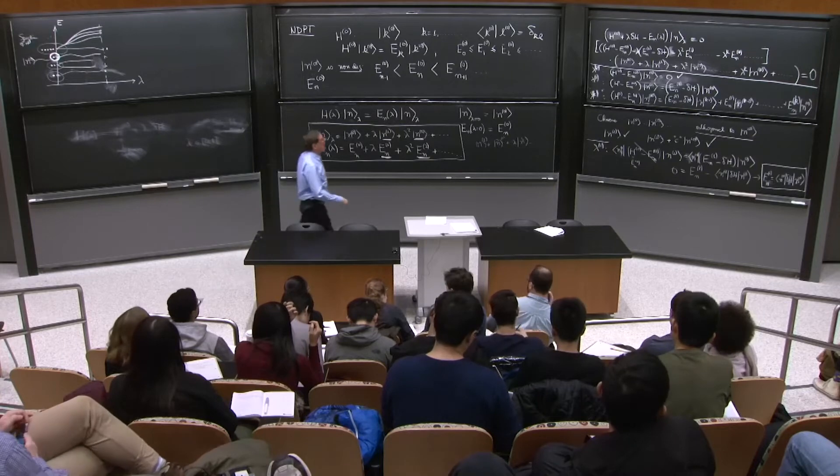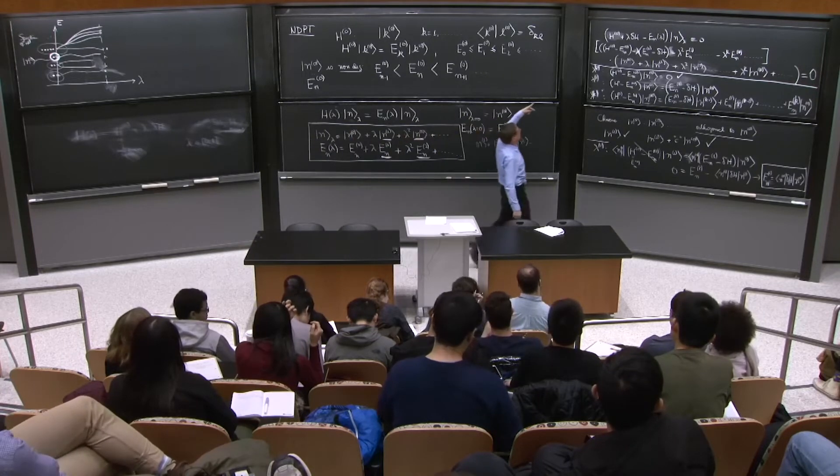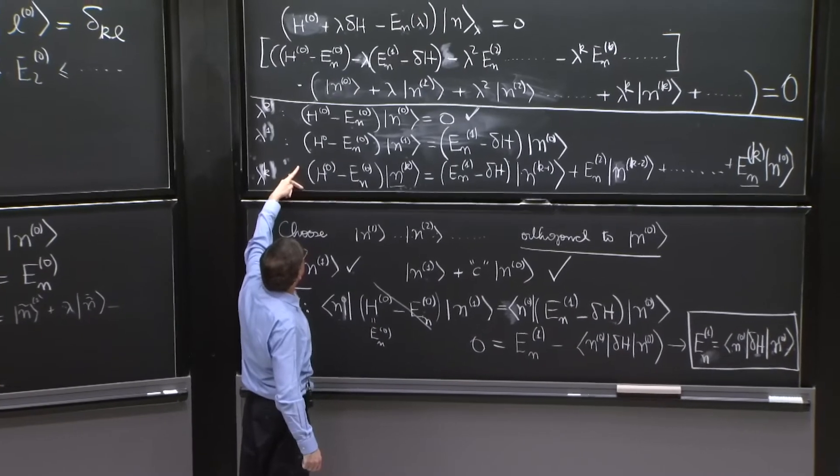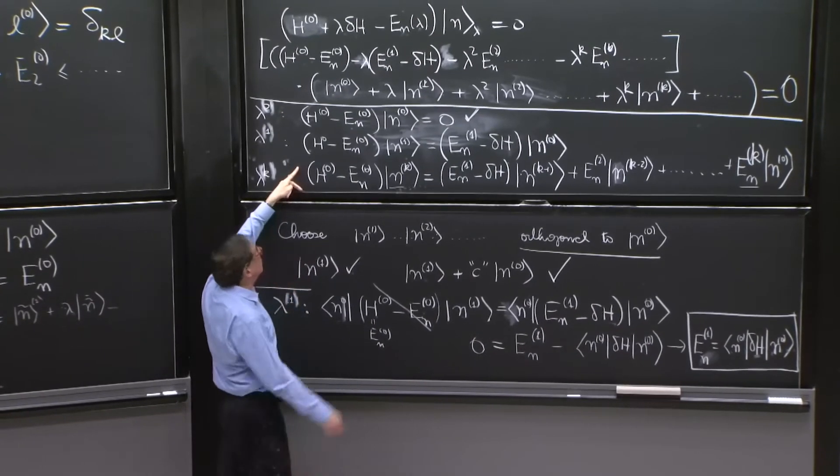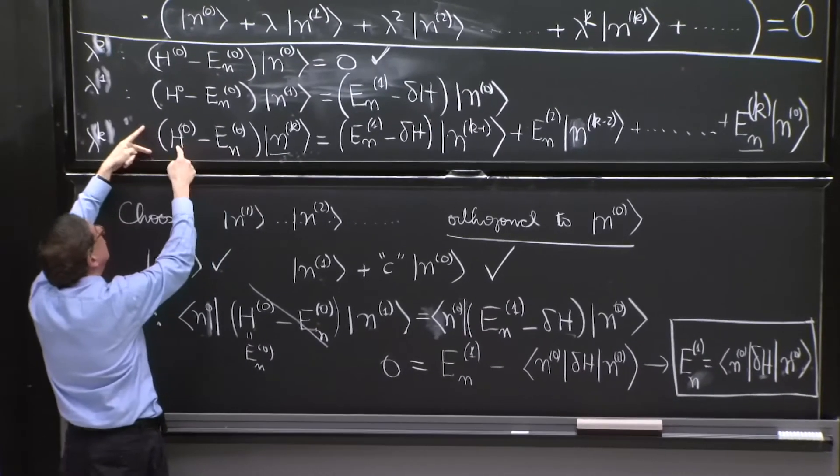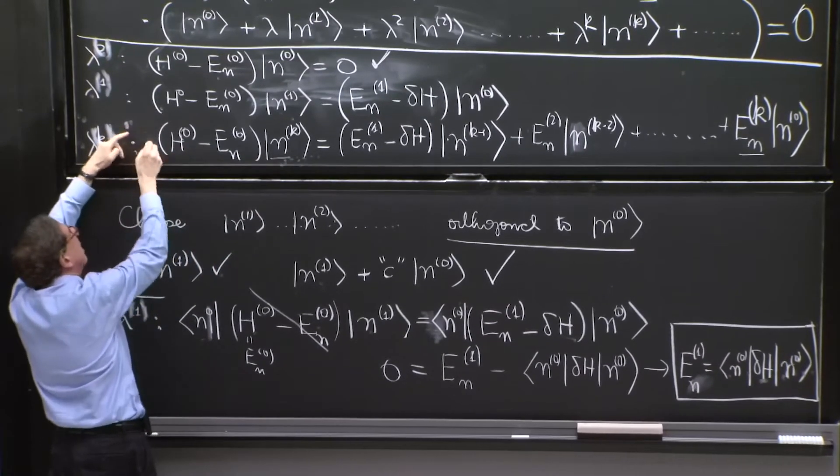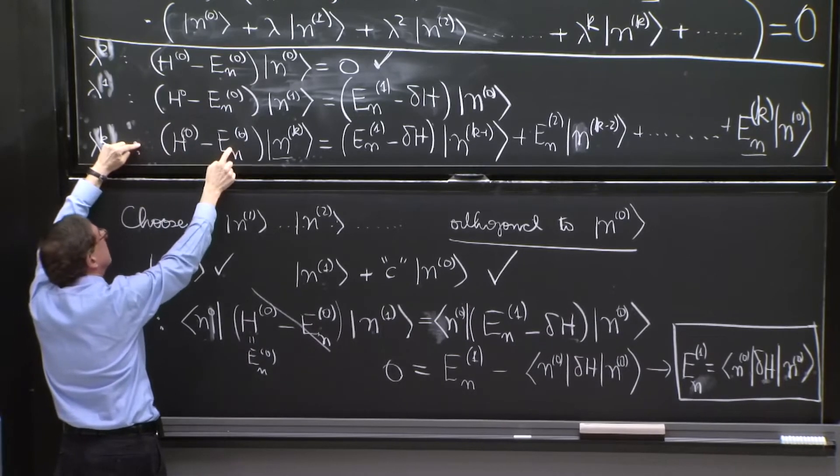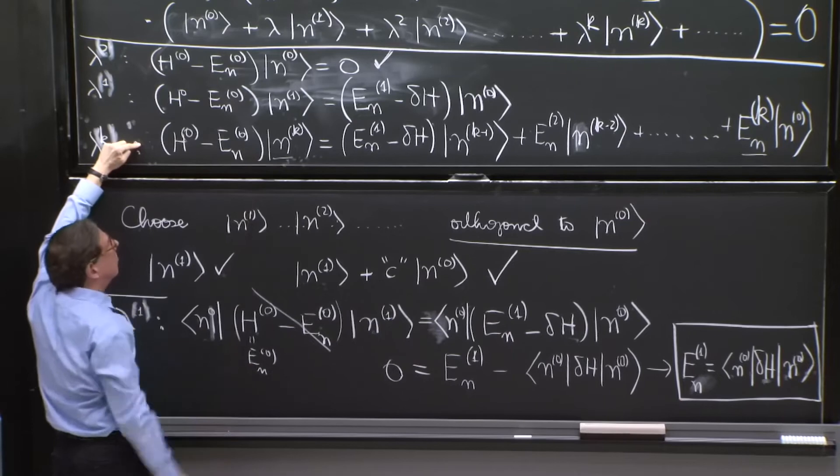I put an n0 to the left of this equation. Now, what do we get? From this term, we get 0 for the same reason. There's an n0 now here. And the h0 is killed by this term, gives you 0.